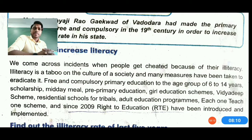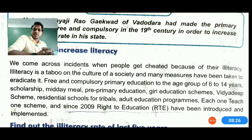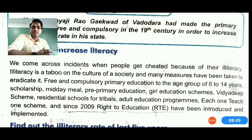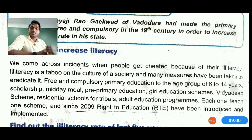Illiteracy is a taboo — it causes people to get cheated. Many measures have been taken to eradicate it: free and compulsory primary education for the age group of 6 to 14 years, government scholarships, midday meals, pre-primary education, girls' education, Beti Bachao Beti Padhao campaign, Vidyapuri residential schools for tribes, and adult education programs. Since 2009, the Right to Education — RTE — has been introduced and implemented so most students receive proper education.